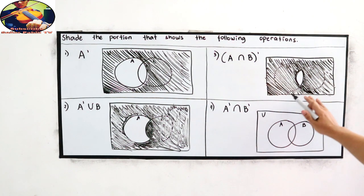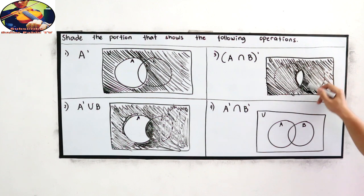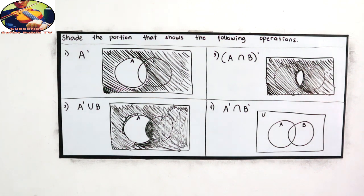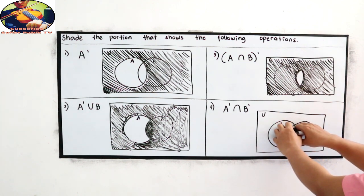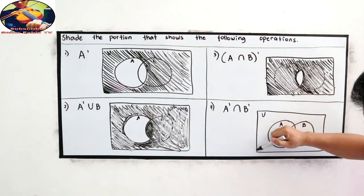This is now our final answer. Next, A prime intersection B prime. So where is A prime? Outside A. Then B prime. Outside B. So outside our A and B. So outside A and B.